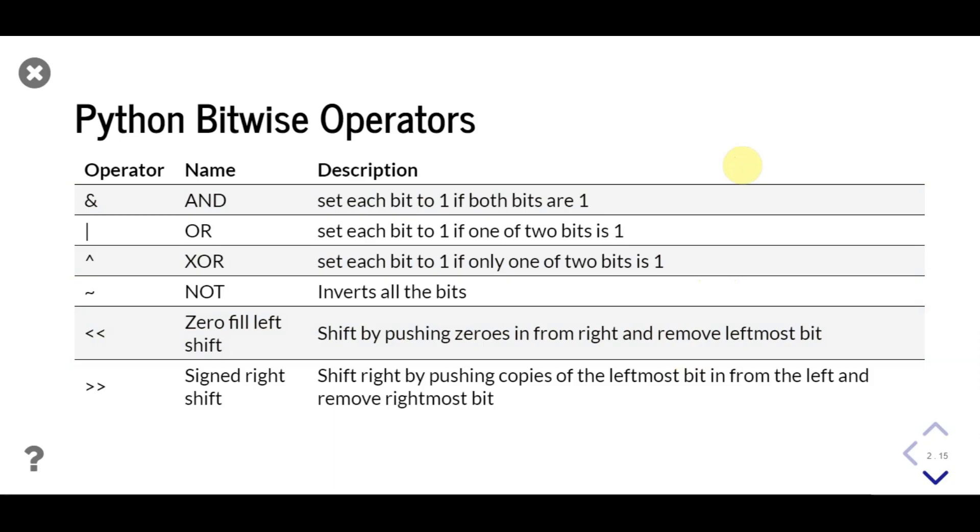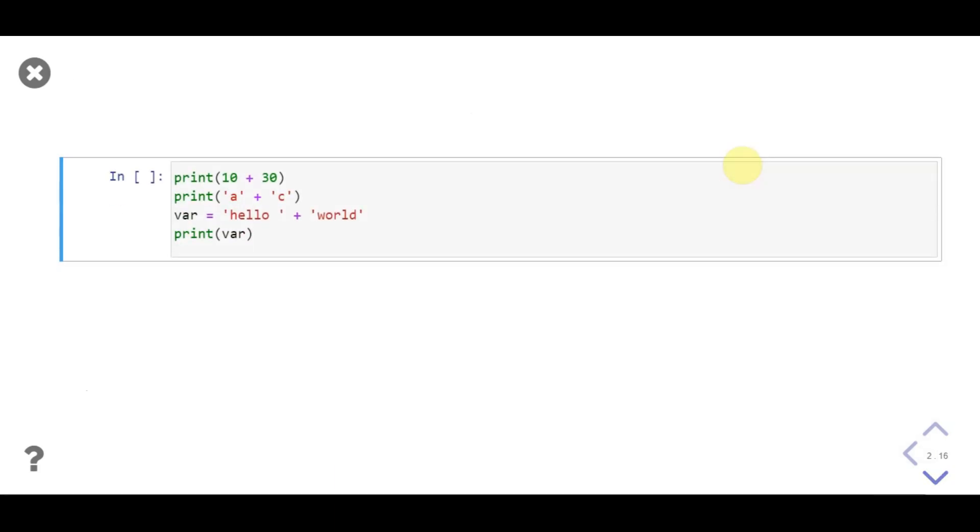Let's take some examples. Here we add 30 to 10 and print its value. Notice in Python, thanks to operator overloading, we can add two string objects to concatenate them. Here we add 'a' and 'c' and print them, then add 'hello' and 'world', store it in a variable, and print that variable.